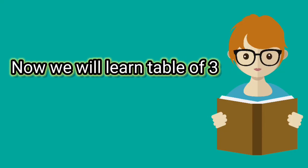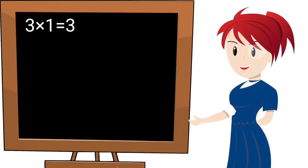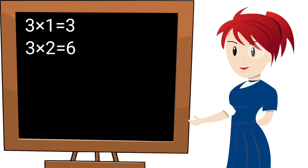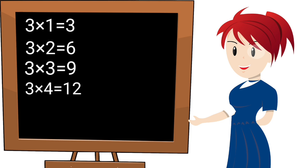Now we will learn table of 3. 3 ones are 3. 3 twos are 6. 3 threes are 9. 3 fours are 12. 3 fives are 15.